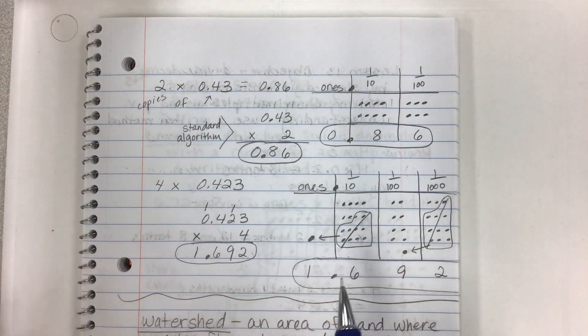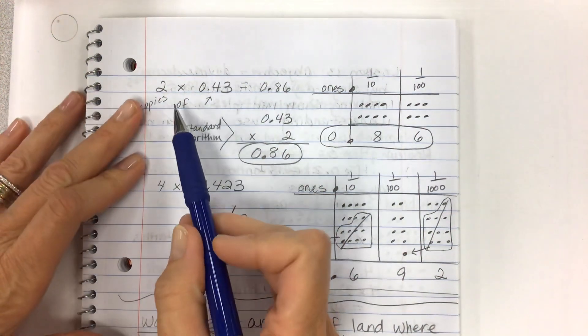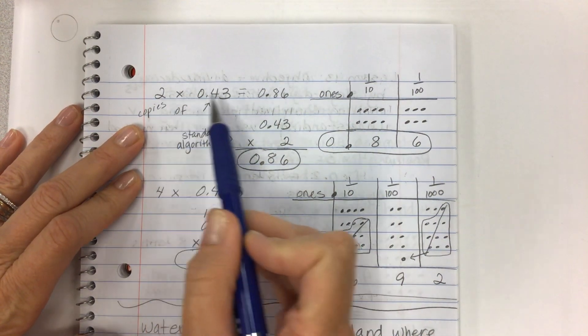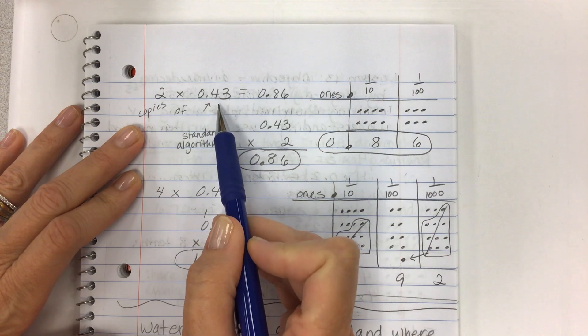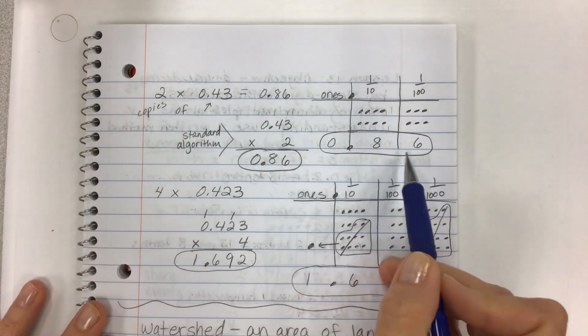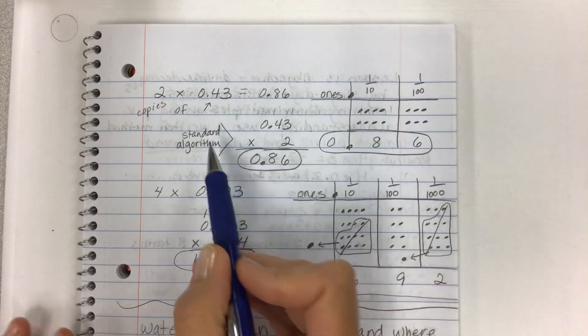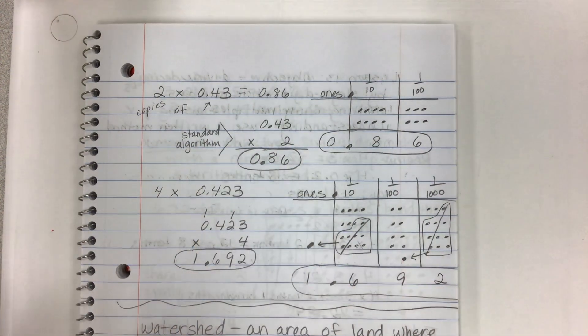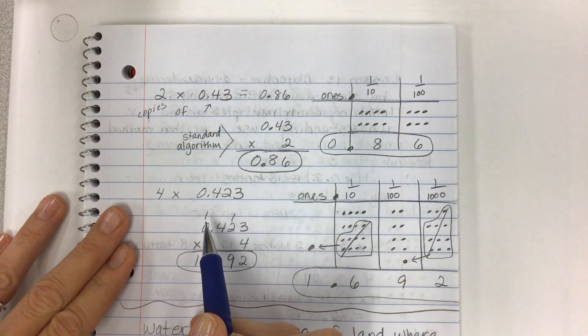You can pause the video to make sure you're getting all the notes and again two copies of this amount 43 hundredths and then what that looks like 43 and 43 and then how you get this in standard form and then the standard algorithm. We're going to eventually move to that.